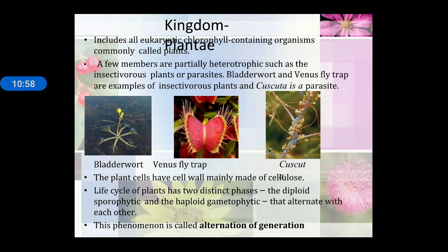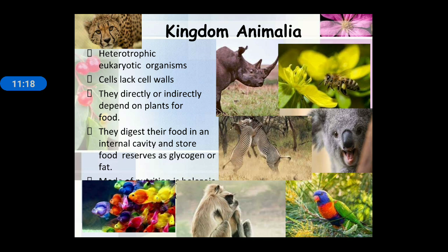Kingdom Plantae is eukaryotic and contains chlorophyll — they perform photosynthesis. Some members of kingdom Plantae are partially heterotrophic, such as insectivorous plants: bladderwort, Venus flytrap, and Cascuta. Kingdom Animalia are heterotrophic and eukaryotic; their cells lack a cell wall. They are directly or indirectly dependent upon plants for food. They digest food in an internal cavity and store food reserves as glycogen or fat.